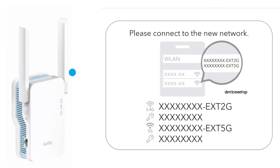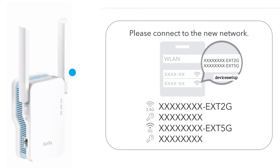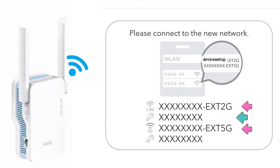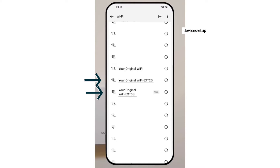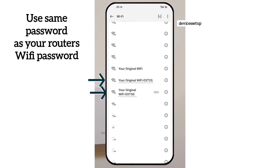After a successful setup, the extender network will pick up the same name as your router's Wi-Fi SSID along with the ext2g and ext5g suffix. You can go to your Wi-Fi list and connect your phone or computer to this extender's network name using the same password as your router's Wi-Fi password.